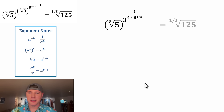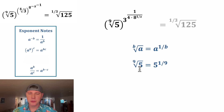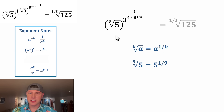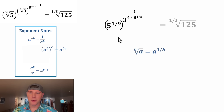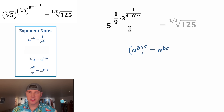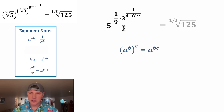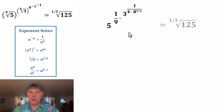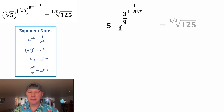Now we can look at this piece. The ninth root of five can be rewritten as five to the one-ninth power, so we can change this to five to the one-ninth power. Then once again, this will multiply by all of this — the one-ninth will multiply by three to all of this. Let's change the three into three over one, and after we multiply across, this nine will go on the bottom. So we have five to the power of three of all this over nine.